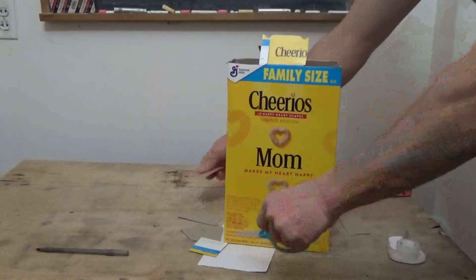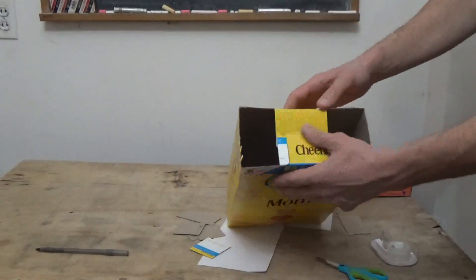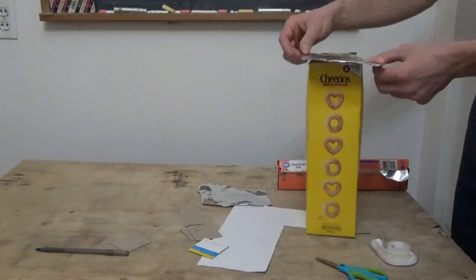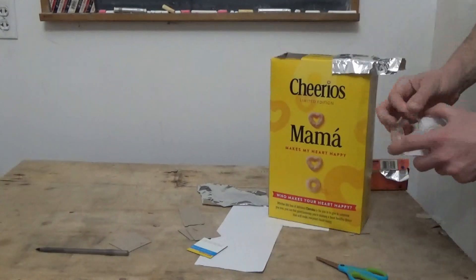I'm going to go ahead and put a piece of tape to hold this together. This part is now going to get covered with aluminum foil. Get enough aluminum foil to cover one side, and we're just securing it to the box.